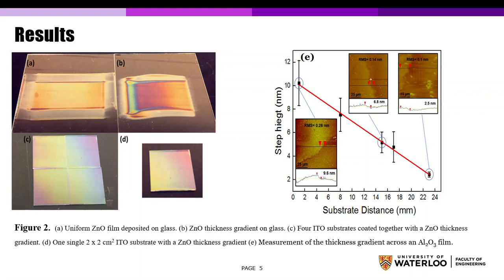Different colors mean different thicknesses. Figure E shows AFM measurements of thickness gradient across an aluminum oxide film. The thickness decreases from 10 to 2 nanometers across the substrate.